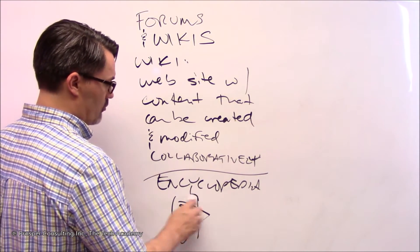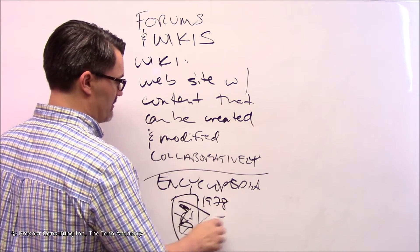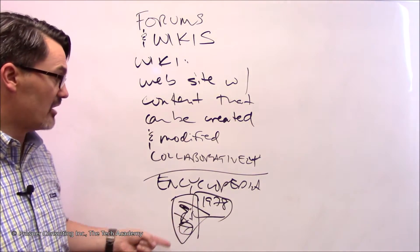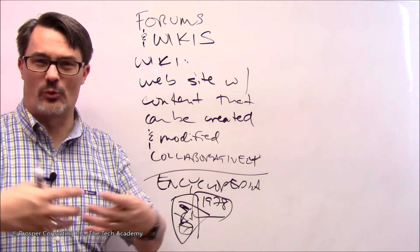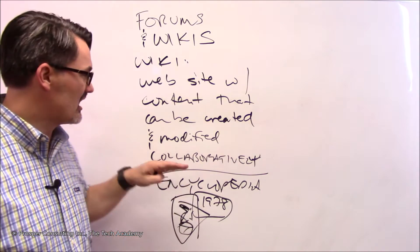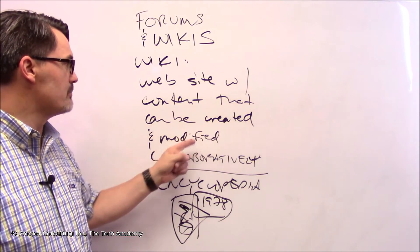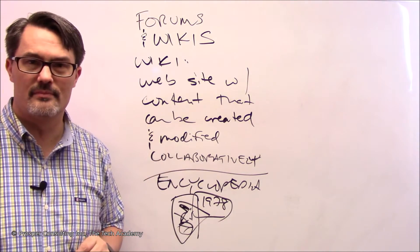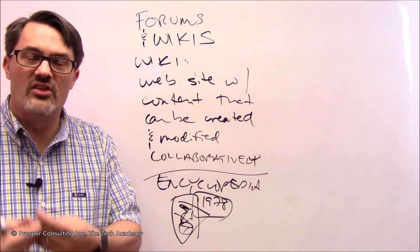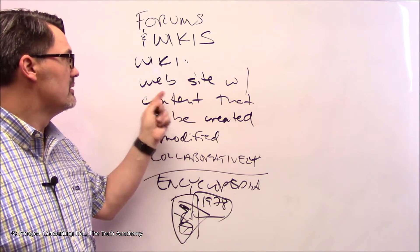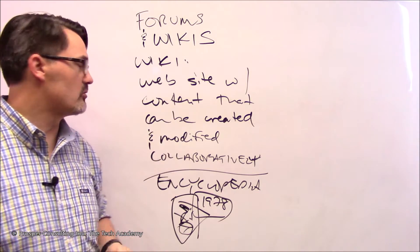And say, this doesn't belong here, and here's a picture of so and so, and you're wrong about this date, it was 1978. And this data is essentially crowdsourced, if you will. It's a collaborative effort to create and modify content. Again, Wikipedia is just one example of the concept of a wiki: simply a website with content that can be created and modified collaboratively.